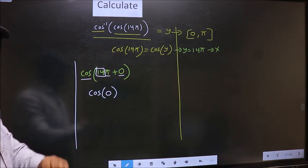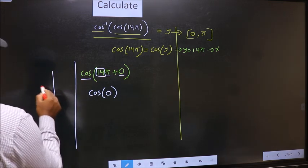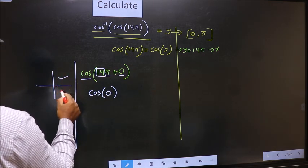And all the even multiples of pi lie either in the first or in the fourth quadrant.